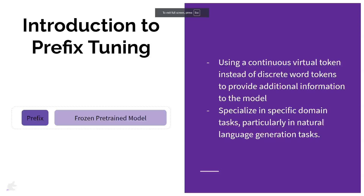Prefix Tuning aims to optimize pre-trained models for specific downstream applications. It involves using a continuous virtual token instead of discrete word tokens to provide additional information to the model. These task-specific embeddings help the large language model specialize in specific domain tasks, particularly in natural language generation tasks for both encoder-decoder and decoder-only architectures. The concept of Prefix Tuning is part of the broader field of parameter-efficient fine-tuning, which focuses on reusing pre-trained models while minimizing computational and resource footprints.